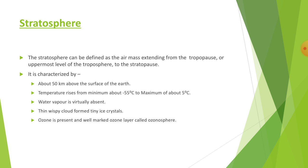The stratosphere exhibits several significant differences from the troposphere: water vapor is virtually absent, and the only clouds found are very thin wispy clouds formed of tiny ice crystals. A well-marked ozone layer, called the ozonosphere, exists within the stratosphere. Ozone is formed from oxygen by a photochemical reaction in which energy from the sun splits apart the oxygen molecule to form atomic oxygen.